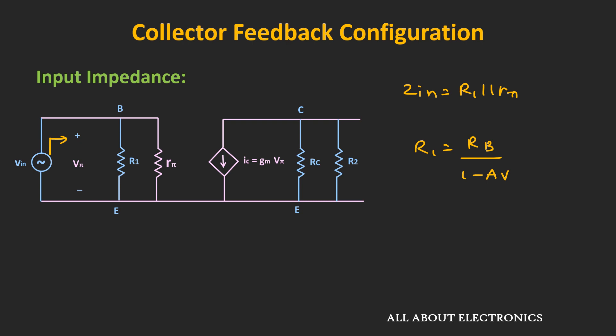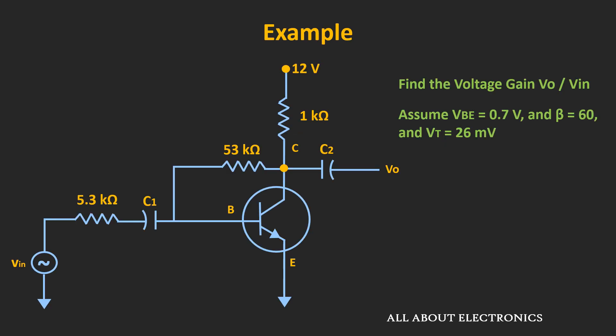To get some practical idea about this configuration, let's take one example. We have been asked to find the voltage gain of this amplifier circuit, given that the voltage Vb = 0.7V and β = 60. To find the voltage gain, we first need to know the transconductance at the operating point, and for that we need to find the collector current. So let's do the DC analysis first.